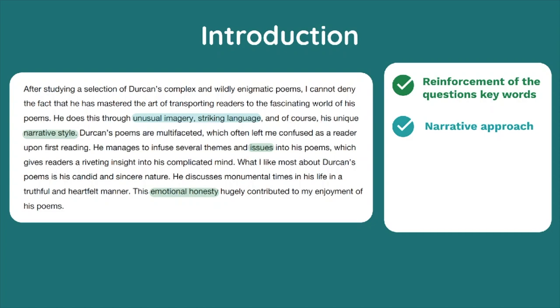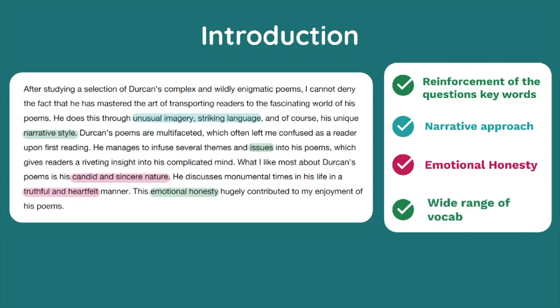In the same way that the student addresses the narrative approach, they also quickly refer to the emotional honesty aspect of the question in their intro, explaining the candid and sincere nature of Durkin's poetry. By addressing both key aspects of the question within the intro, this student has given a very strong indication to the corrector that they will cover exactly what the question asks. I was also very impressed with the wide range of vocabulary the student displays, using words such as 'enigmatic' and 'multifaceted' — showing they have a broad vocab and the potential to score highly in the L section of PCLM.